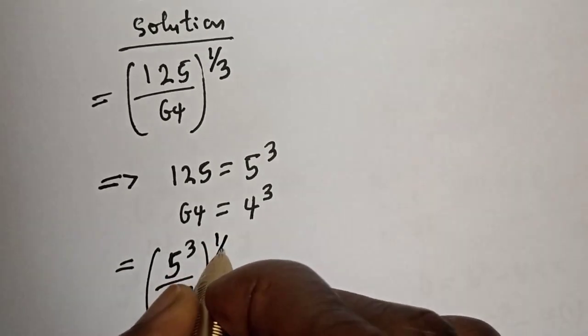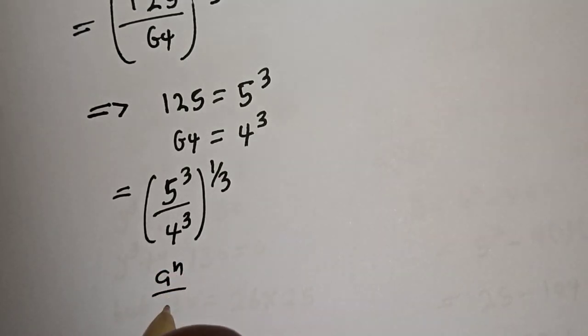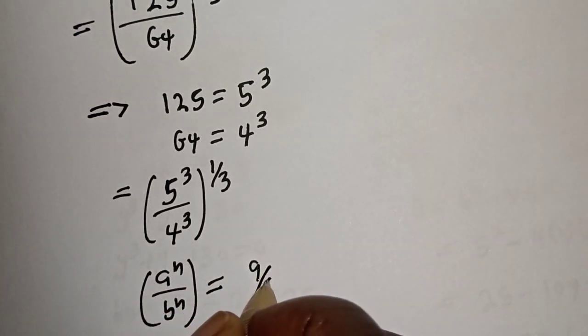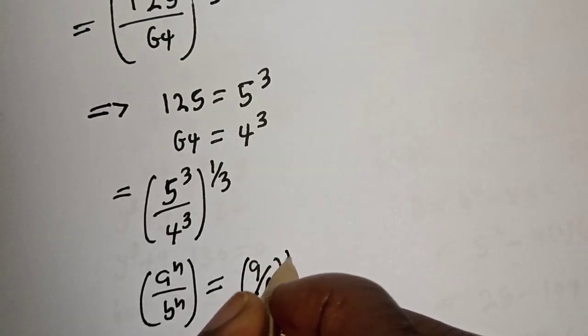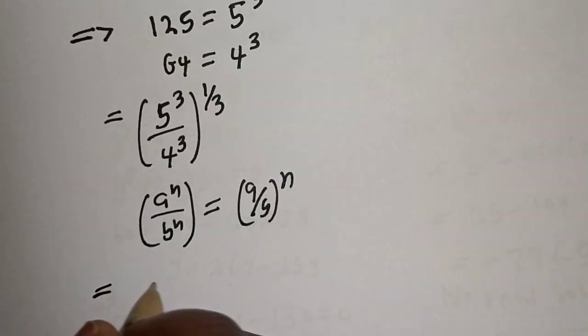Take note of this rule: if you have a raised to power n over b raised to power n, this is equal to a over b raised to power n.